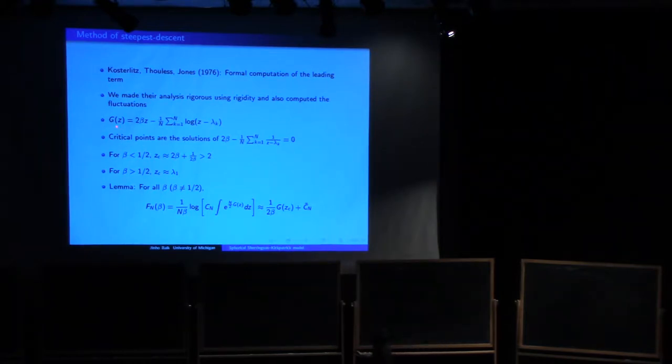Remember that the function that we have to analyze is g, given by this form here. Beta is there and the lambda k is there. And n is going to be large. So we have to do the critical points. If the critical points, you take derivative to z, then we get this equation.